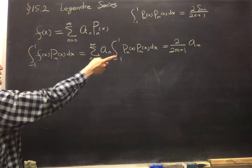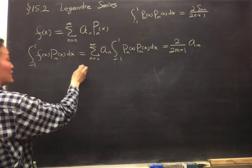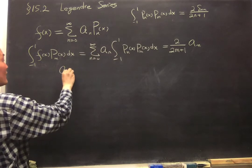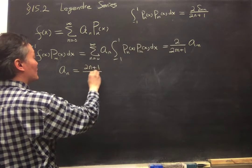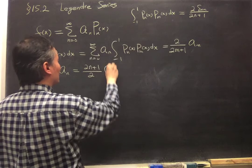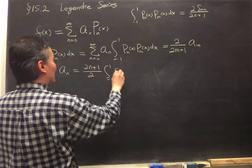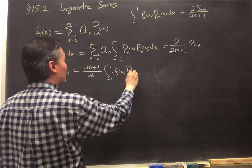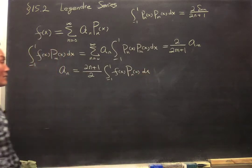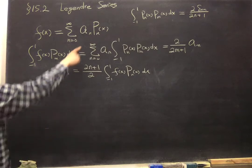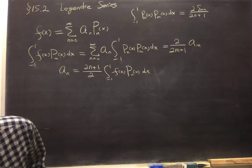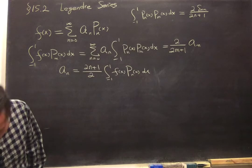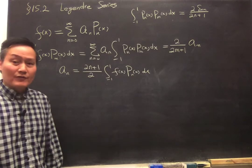But if you change m back to n, so a_n will be 2n plus 1 over 2 integrate f(x) times P_n(x), integrate over x. Okay, so this is the formula for the coefficient in the Legendre series. That's pretty straightforward. This is equation 15.40.